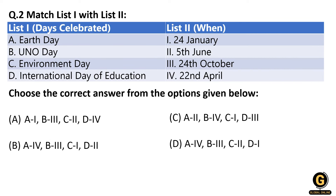The next question is also a 'match the following.' List 1 gives names of important days, and List 2 gives their dates. As I mentioned, nowadays NTA and UGC are asking questions that are clubbed — they don't ask straightforward questions like 'when is Earth Day?' Instead, they give you four or five days together with multiple options below.